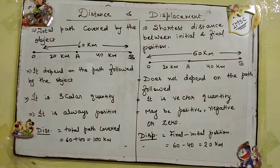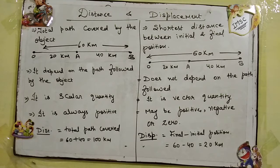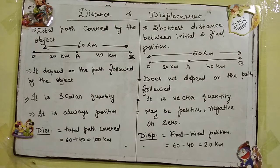Distance is always positive — obviously, if an object is moving and covering a path from one position to another, it always covers some distance, so it is always positive. But displacement may be positive, negative, or zero. I will tell you how that works with an example.